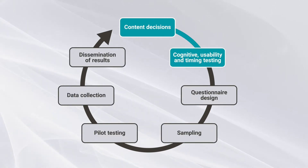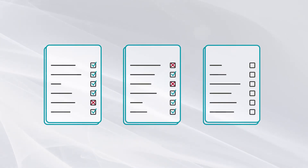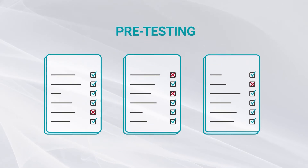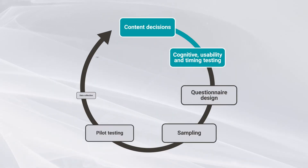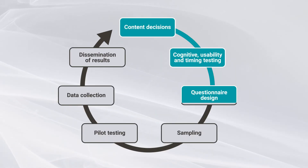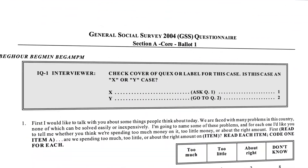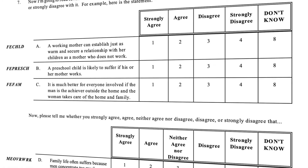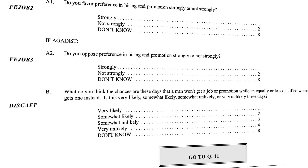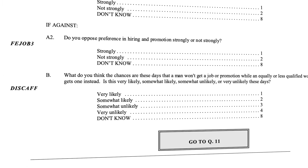Next is pre-testing. It's important that respondents understand the questions in the same ways. Pre-testing cognitive usability and timing identifies and minimizes sources of measurement error. Questionnaire design looks at the order and allocation of questions on ballots to minimize non-response, measurement error, and respondent fatigue.